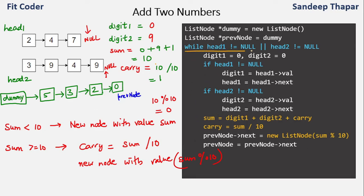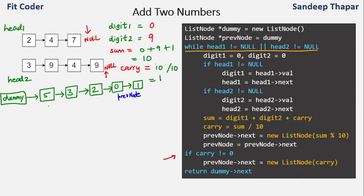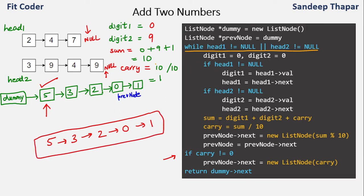Now we check the while condition: both head1 and head2 are null, so the while loop terminates since we've traversed both linked lists fully. After the while loop ends, we check if there is any remaining carry. Carry was 1 from the last addition, so we create a new node with value 1 and connect it — making the link from node 0 to node 1. The addition of the two linked lists is complete. To return the value we return dummy.next, which points to the first node, giving us the output 5 3 2 0 1.